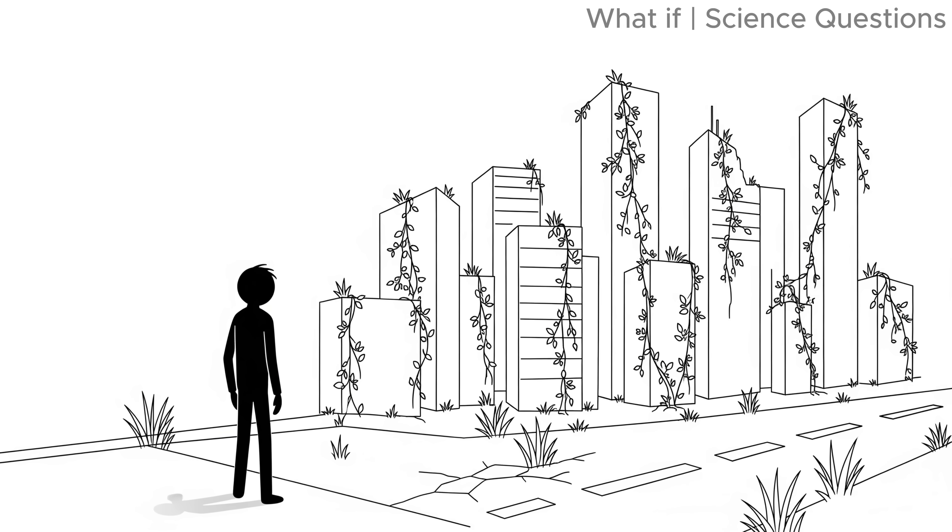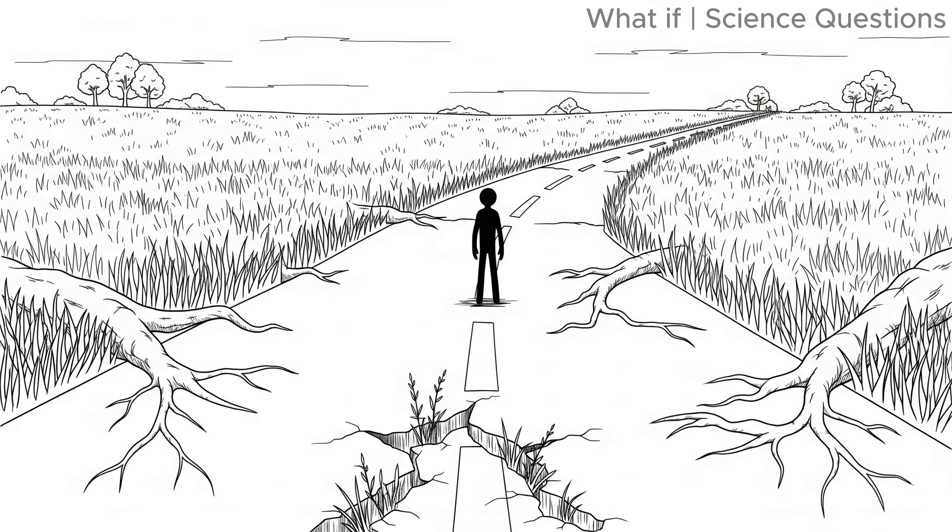Within months, nature would begin its invasion. Without constant mowing, grass would rise, weeds would crack through pavement, and roots would crawl over abandoned roads.